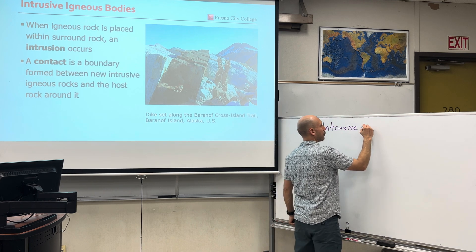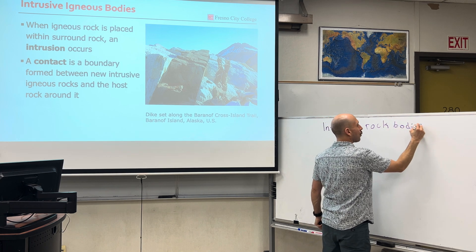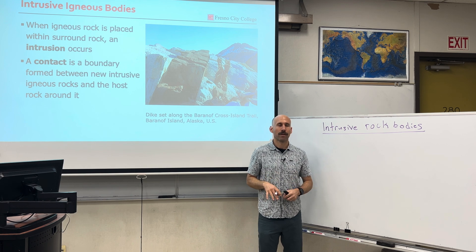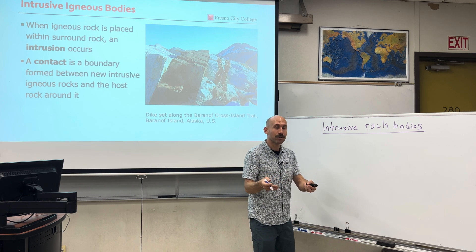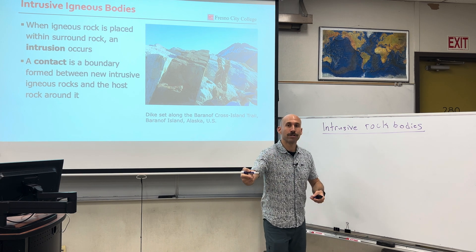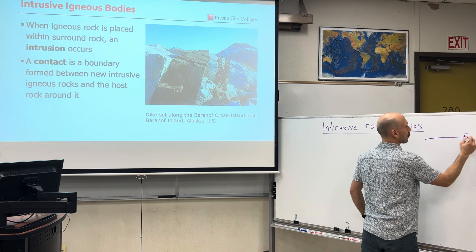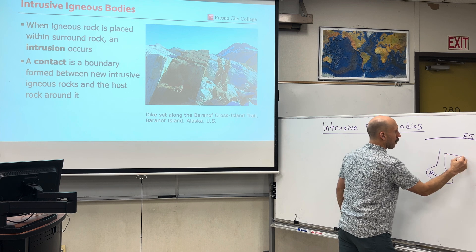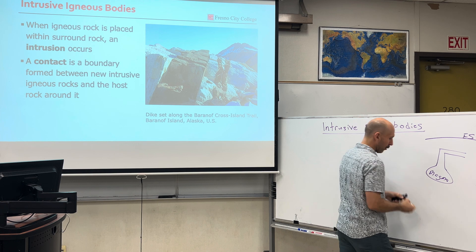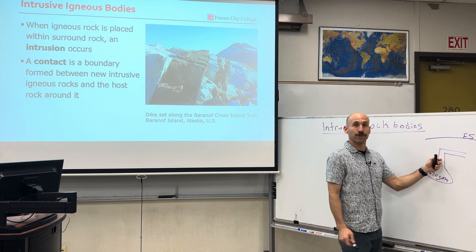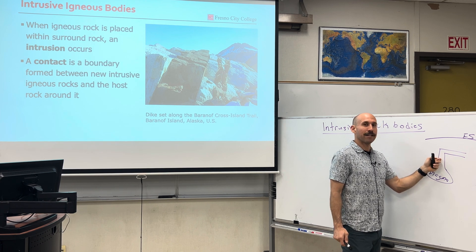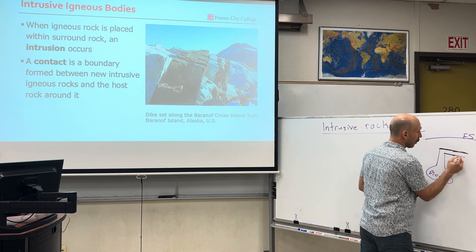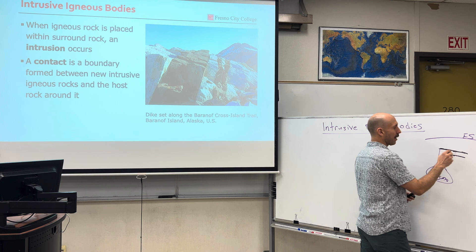Some terminology on intrusive rock bodies. Rocks that form underneath the surface of the earth are called igneous intrusive rocks. When a rock emplaces into surrounding rock, we say that it intrudes into that rock. So here's earth's surface, here's a magma chamber, and that magma chamber comes up. The verb we use is that it intrudes into the host rock or the country rock, and the feature is called an intrusion.